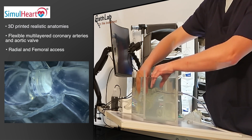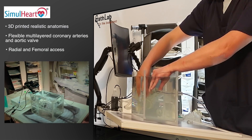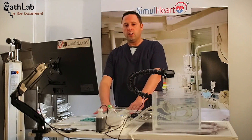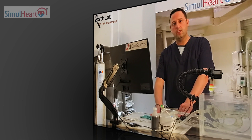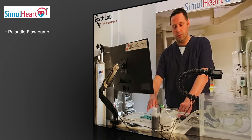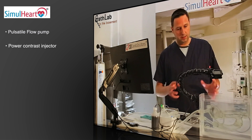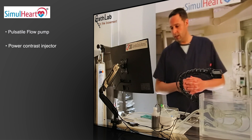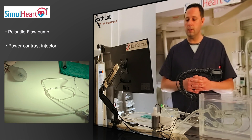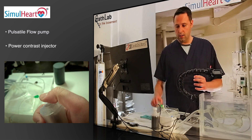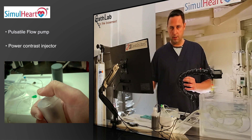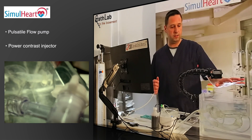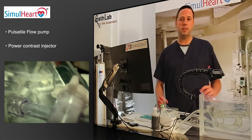This is the left coronary artery and this is the right coronary artery. Inside this box we have the pulsatile pump that is making pulsatile flow throughout the system, and we also have the power injector that, when we press this button, is going to take the dye out of this bottle and send it into the coronary arteries.